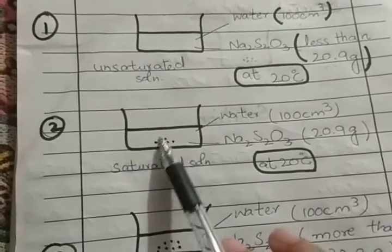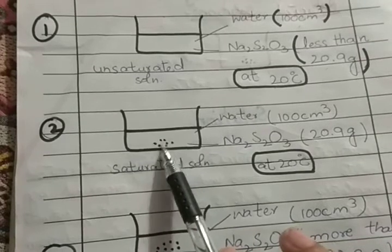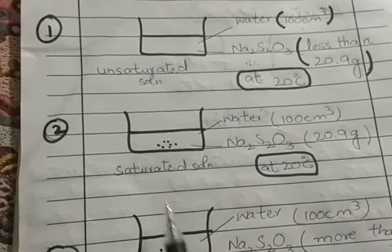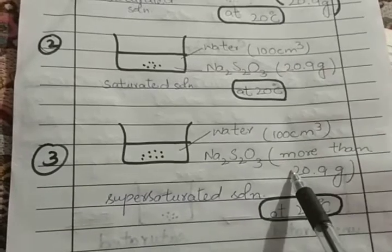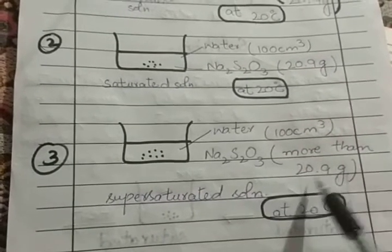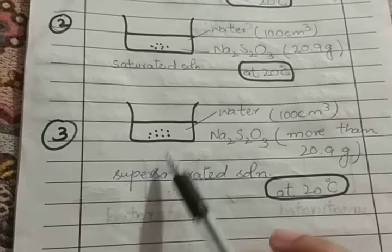For the saturated solution, if we keep increasing the solute amount — adding sodium thiosulfate until some remains undissolved — we get a saturated solution. For the supersaturated solution, we take 100 cm³ of water at 20°C and add more than 20.9 grams of sodium thiosulfate, then heat it up so the excess dissolves.